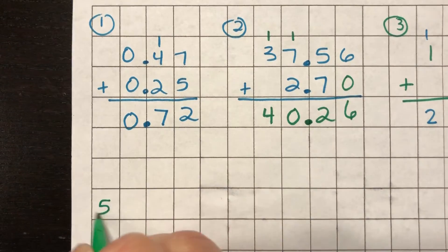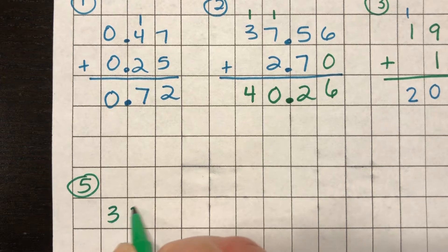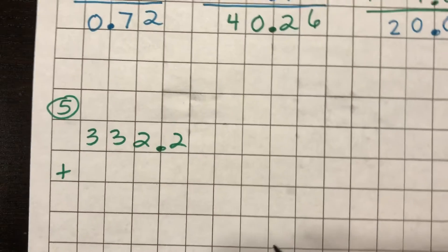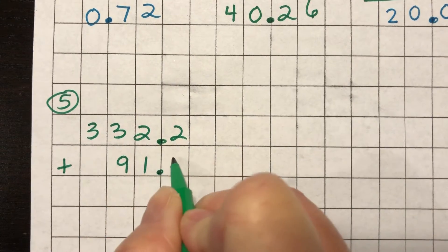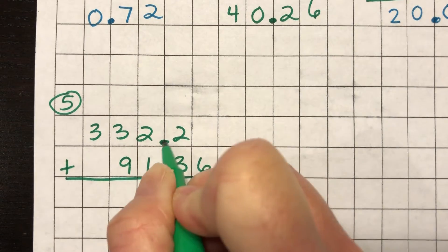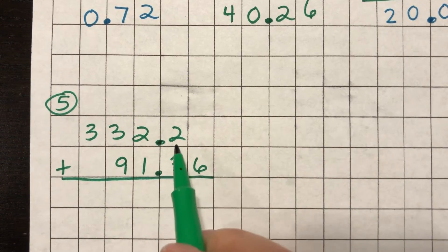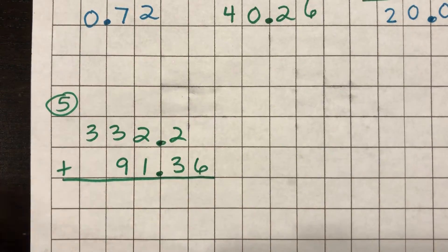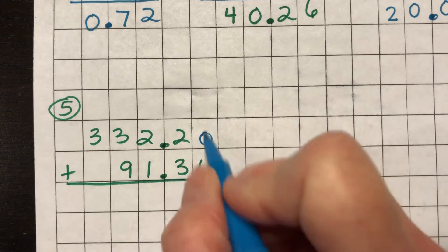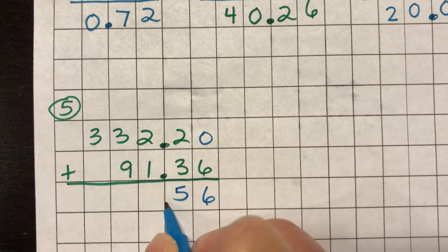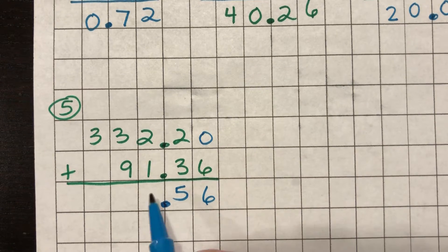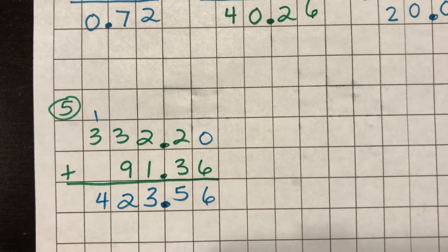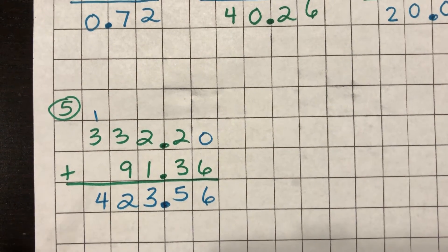Okay. I'm going to write my number five right here. Number five. I have three hundred thirty two and two tenths plus ninety one and thirty six hundredths. It needs to be set up like this. Your decimal points need to be lined up so that you're adding the ones together, the tens together, the hundreds together. I'll put in my zero here. Zero plus six is six. Three plus two is five. I'm going to bring down my decimal point. It's my third button. Two plus one is three. Nine plus three is twelve. Carry my one. And three plus one is four. So you should have four hundred twenty three and fifty six hundredths.